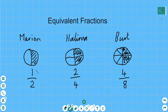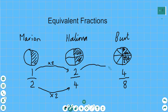You might notice that we can turn Marion's fraction into Halima's fraction by multiplying by two, but we have to multiply the top and the bottom by the very same number. Similarly, we can turn Halima's fraction into Bert's fraction by multiplying by two — but we've got to do the same for the numerator, the top, and the denominator, the number at the bottom. So you can turn a fraction into any other equivalent fraction by multiplying the top and bottom by the same number.